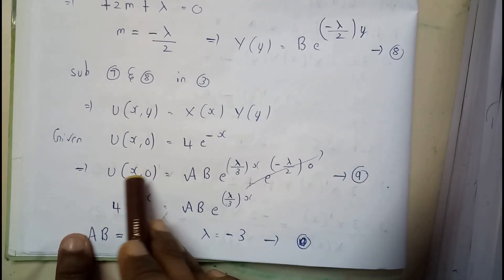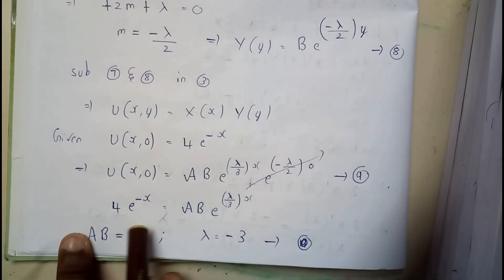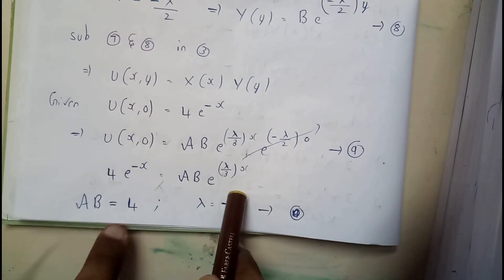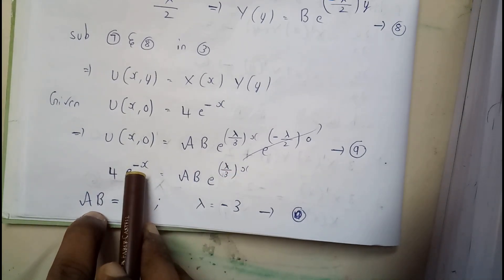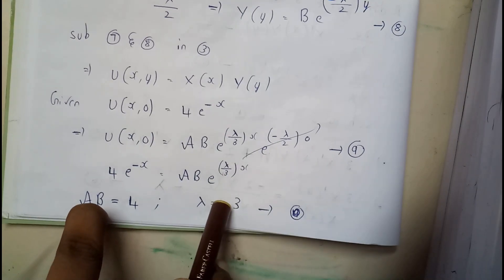In the question he gave x comma 0, so I substituted t equals 0 and got this. Now I am comparing them. I got AB equals 4 and lambda over 3 equals minus 1, so lambda equals minus 3.